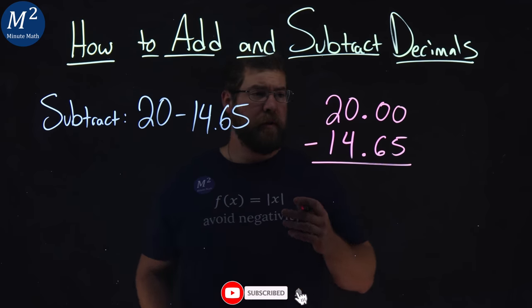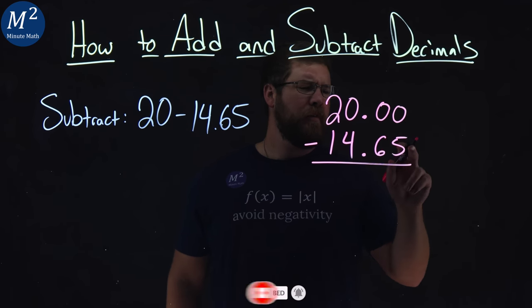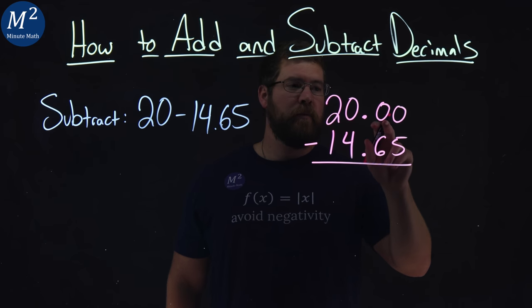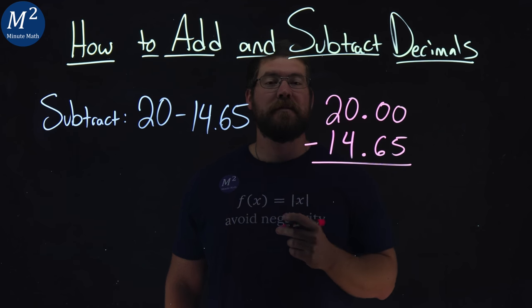Now we subtract the two numbers. This is the hard part here. 0 minus 5. Can't do that. Can I draw from this 0? No. Can I draw from this 0? No.